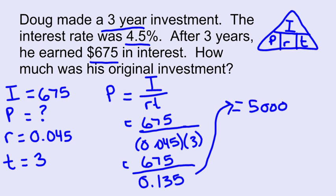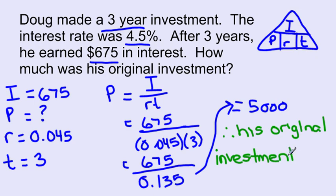So I'm going to write my therefore statement, making sure I'm answering the question. The question was, how much was his original investment? So you could say, therefore his original investment was $5,000.